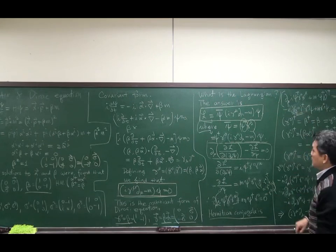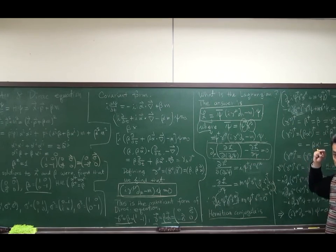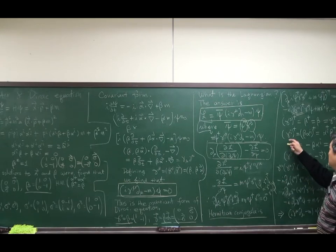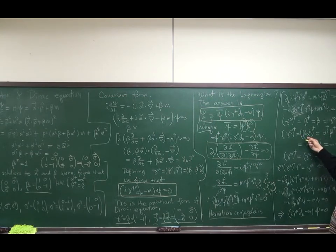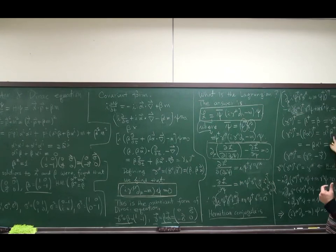I have rather complicated object. Gamma mu dagger. It can be computed component by component. For the 0 component, gamma 0 dagger. It's beta. Beta dagger is beta. So, beta is gamma 0. It is the same. What happens to the i component? The i component is beta alpha i. And, Hermitian conjugate is flip the order and take the complex conjugate for each case. So, alpha i dagger and beta dagger. And, as we know, alpha i and beta, both of them are Hermitian matrices. So, just alpha i beta.